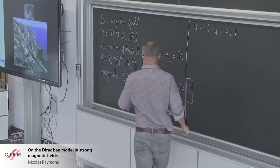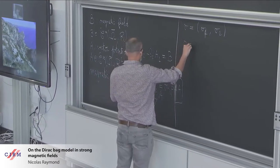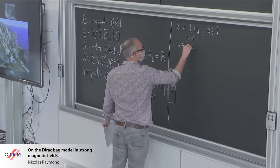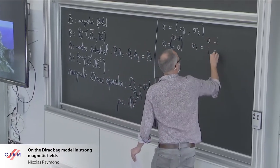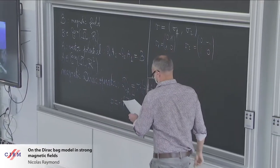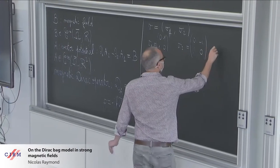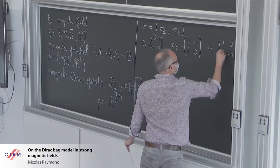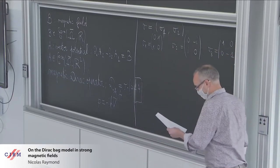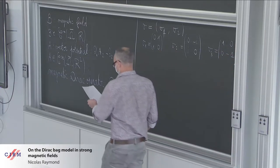The usual Pauli matrices: sigma 1 is 0, 1, 1, 0. Sigma 2 is 0, minus i, i, 0. And probably I will need sigma 3: 1, 0, 0, minus 1.